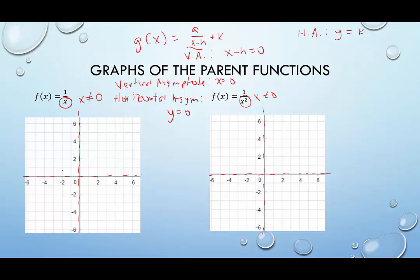For the 1 over x parent function the three points I'm going to use are: negative 2, negative 1 half; negative 1, negative 1; and negative 1 half, negative 2 — those are in quadrant 3. The curve hugs both asymptotes and is never going to touch them, giving a nice curved shape.